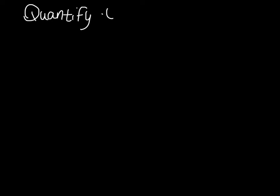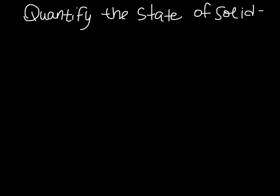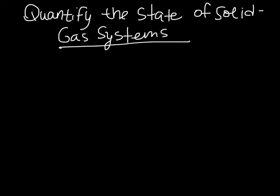We need to be able to quantify the state of a solid-gas system in order to determine if it is in equilibrium or how far it is from equilibrium. Let's consider a generic reaction that looks like this, where we have L and M reacting to form R and S. The lowercase letters indicate the stoichiometric coefficients, and the capital letters are the species.